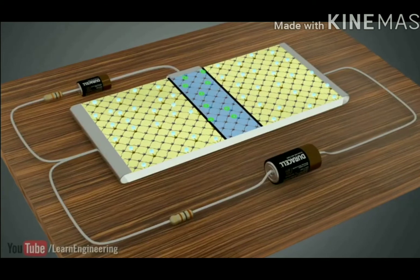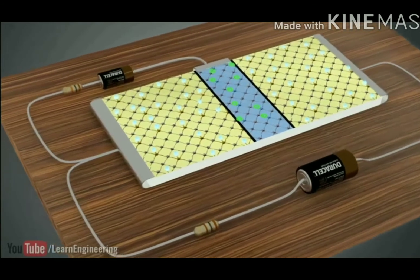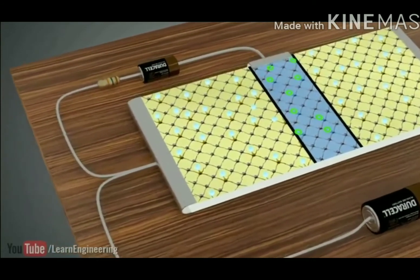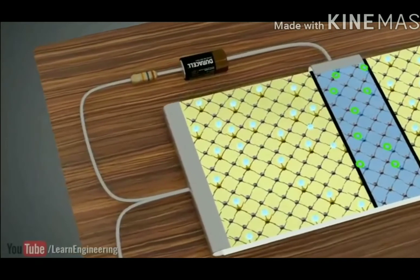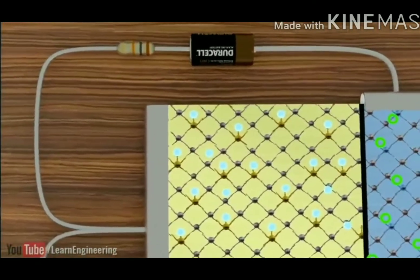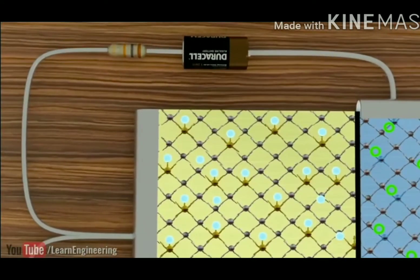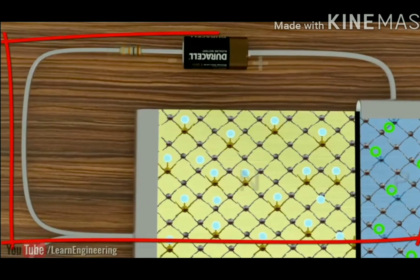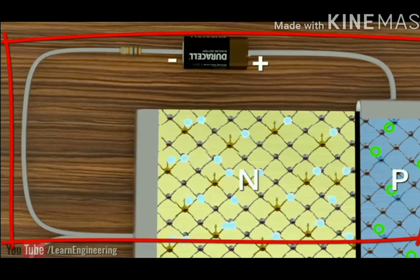To turn the transistor ON, we apply a positive voltage from the base terminal to the emitter terminal. This makes the base-emitter junction forward biased in that direction.